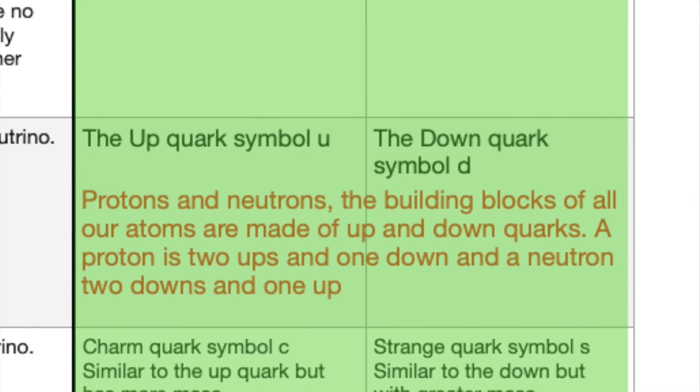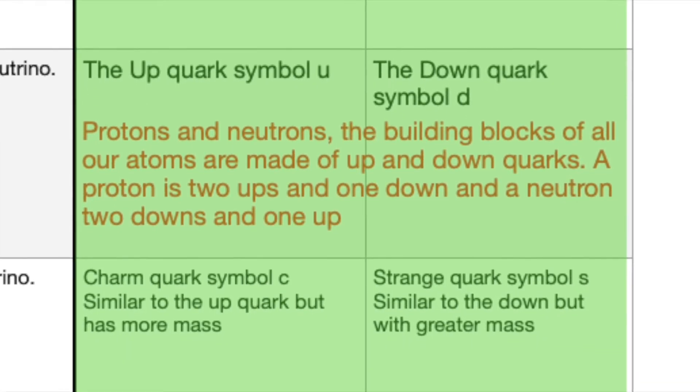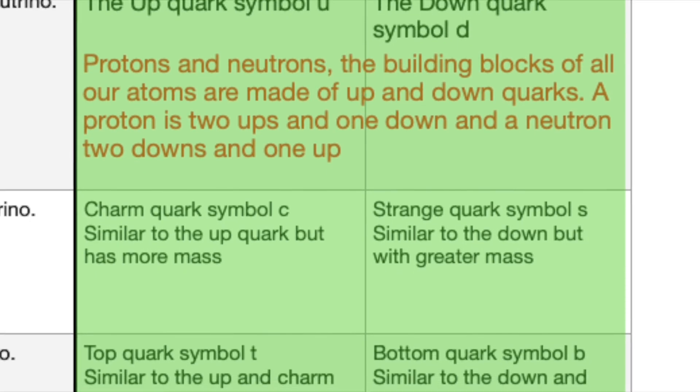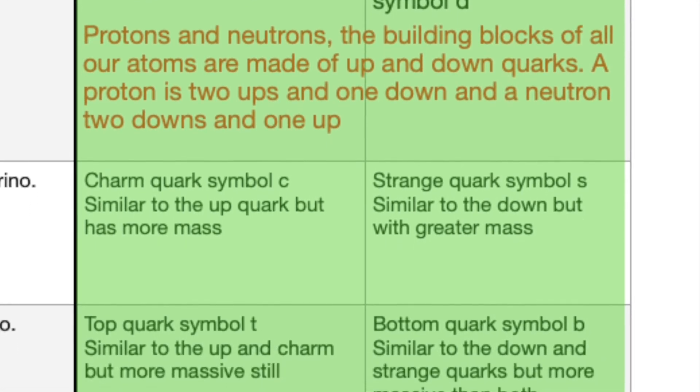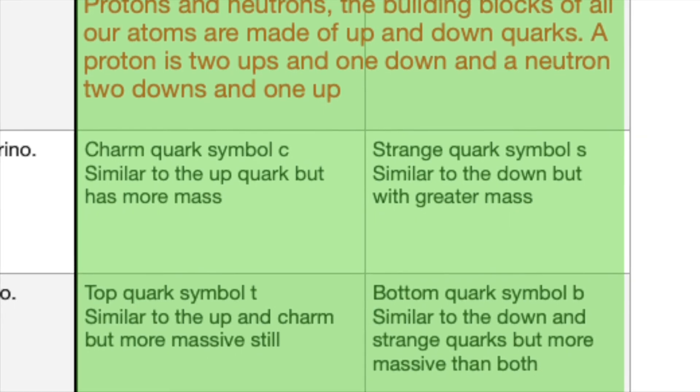It is the up and down quarks that are especially important to us, being the building blocks of protons and neutrons. The other four quarks—charm, strange, top, and bottom—are rarely produced and have very ephemeral lives.